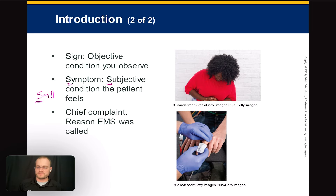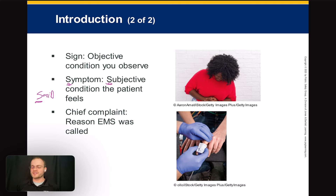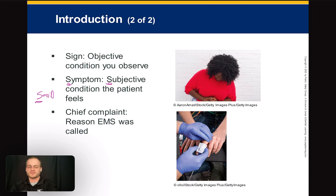Symptoms include: I'm nauseated, I'm in pain, I feel dizzy. Signs are things like vomiting or pooping blood — things I can observe. On an exam, they might list something and ask, 'Is this a sign or symptom?' Nausea is a symptom; observing the patient vomiting is a sign. A chief complaint is the reason EMS was called — essentially a single phrase like 'I'm short of breath' or 'I have chest pain.'